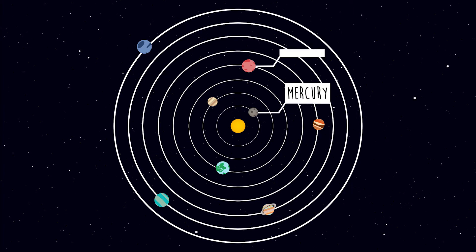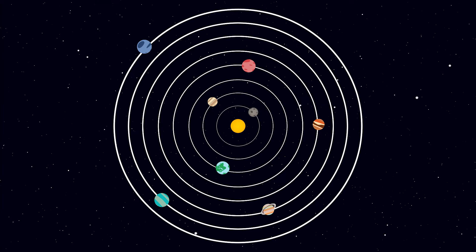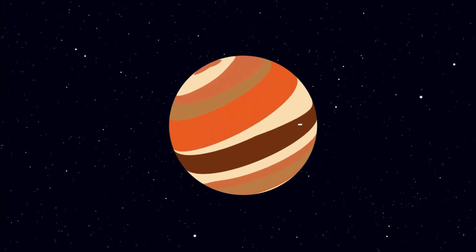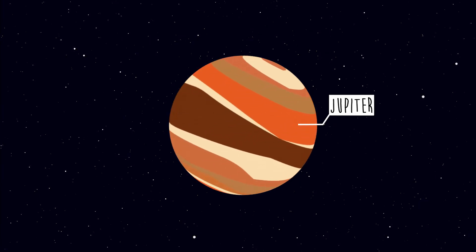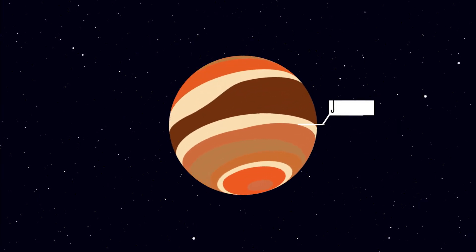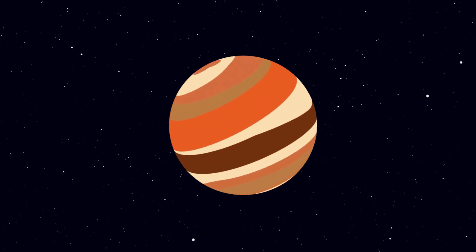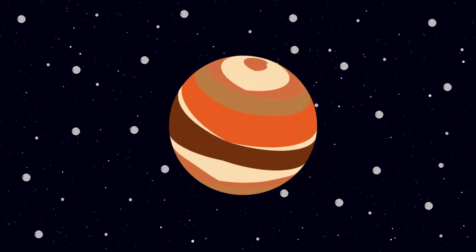The largest planet is Jupiter, followed by Saturn, Uranus, Neptune, Earth, Venus, Mars, and the smallest being Mercury. Jupiter is the biggest planet of our solar system and has 61 moons.